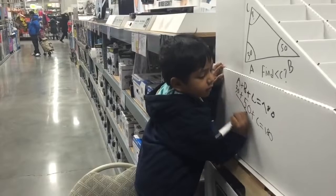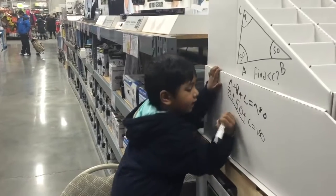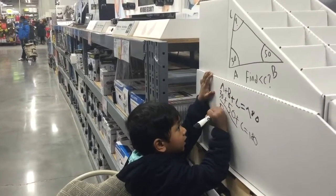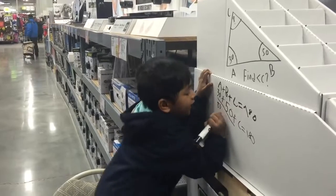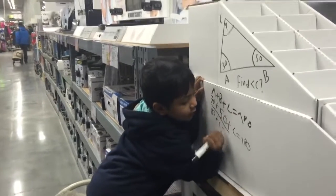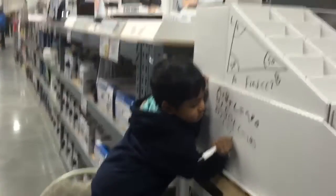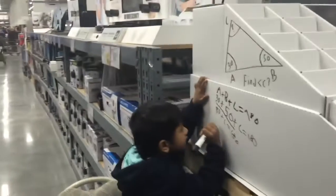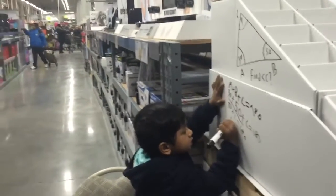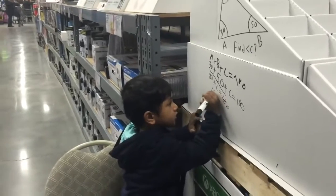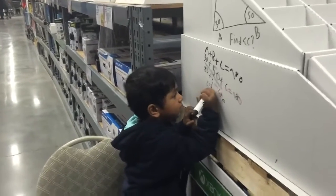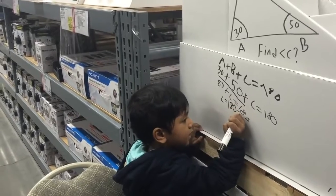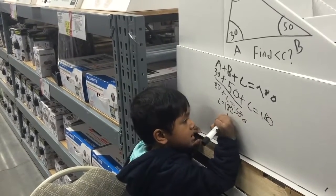That's the problem. So C is found by 180 minus 80. So we have a geometric problem for C. 180 minus 80 must be 100. So C is 100.